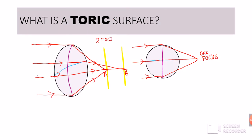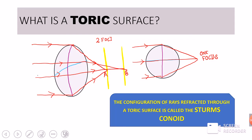When we study the configuration of rays as they pass through a toric surface — how they get refracted, how they form two foci, and what the configuration of the rays is at every point of their journey — we are studying nothing but Sturm's conoid. Sturm's conoid is nothing but the configuration of rays refracted by a toric surface.